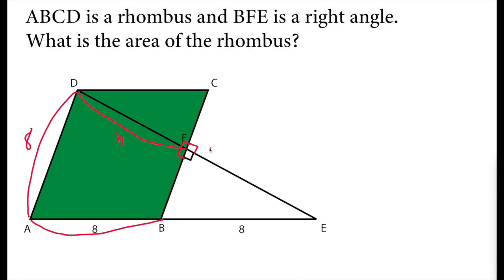So we can call it H. This length will be used for finding the area of the rhombus. So what is the area of the rhombus? Base times height. So the base is 8. So we need to find the H here.